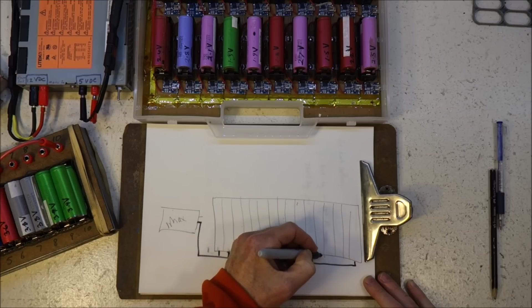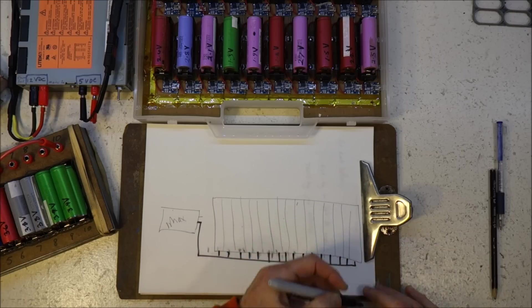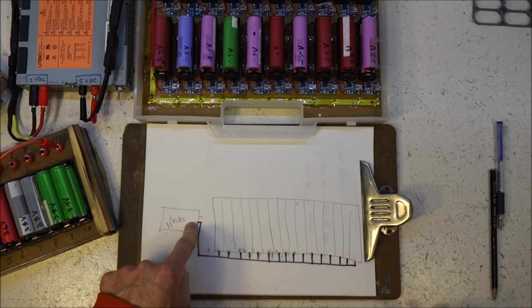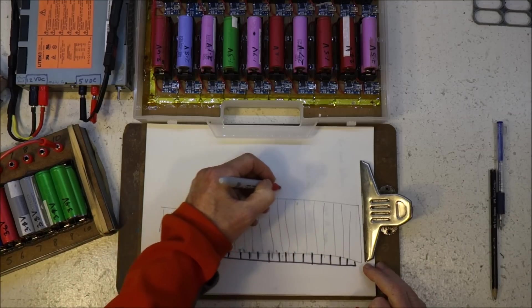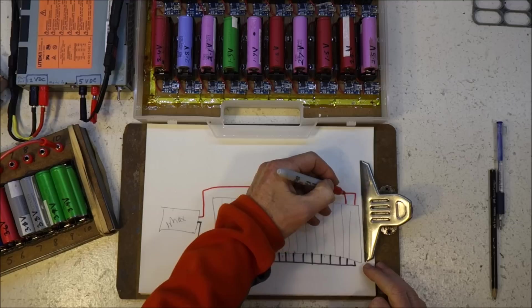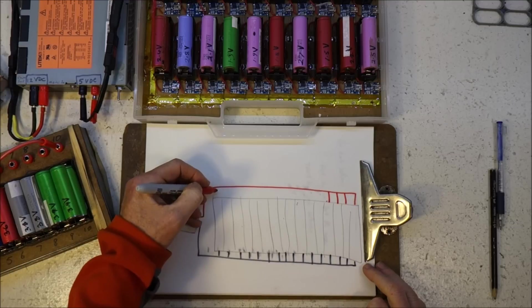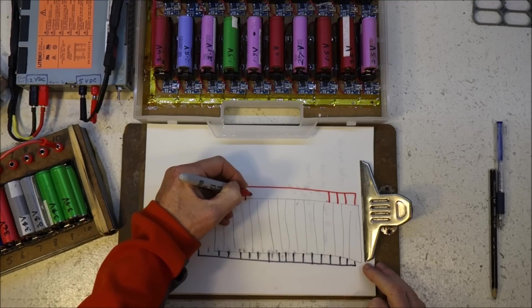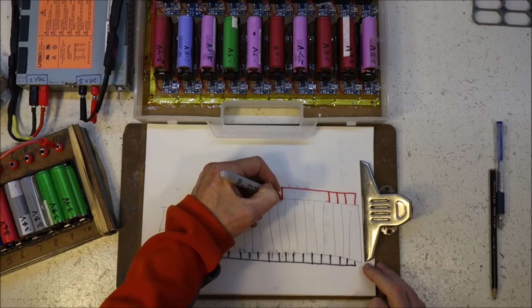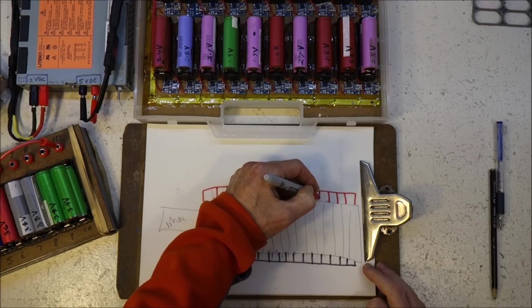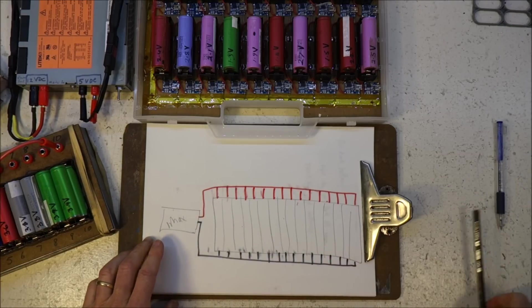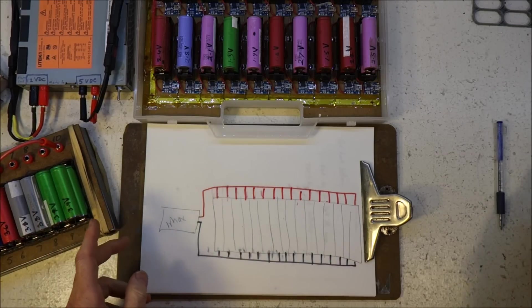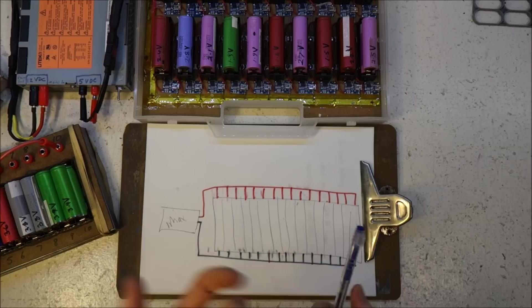The negatives of all the battery holders are connected together and plugged into the negative on the IMAX output. And the positives are all connected together. It's an incredibly simple wiring setup, which is one of its key strengths. You don't have to think too hard about wiring that.